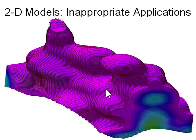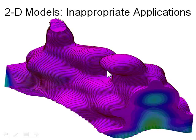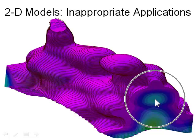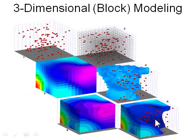Two-dimensional gridding falls apart when we start modeling data in which the dependent variable varies with elevation or depth. In this example, the dependent variable might represent contamination levels, precious metal concentrations, hydrocarbon levels, hydraulic conductivities, soil compaction, geothermal levels, and so on. These types of spatial data sets cannot — repeat, cannot — be modeled with two-dimensional gridding methods.